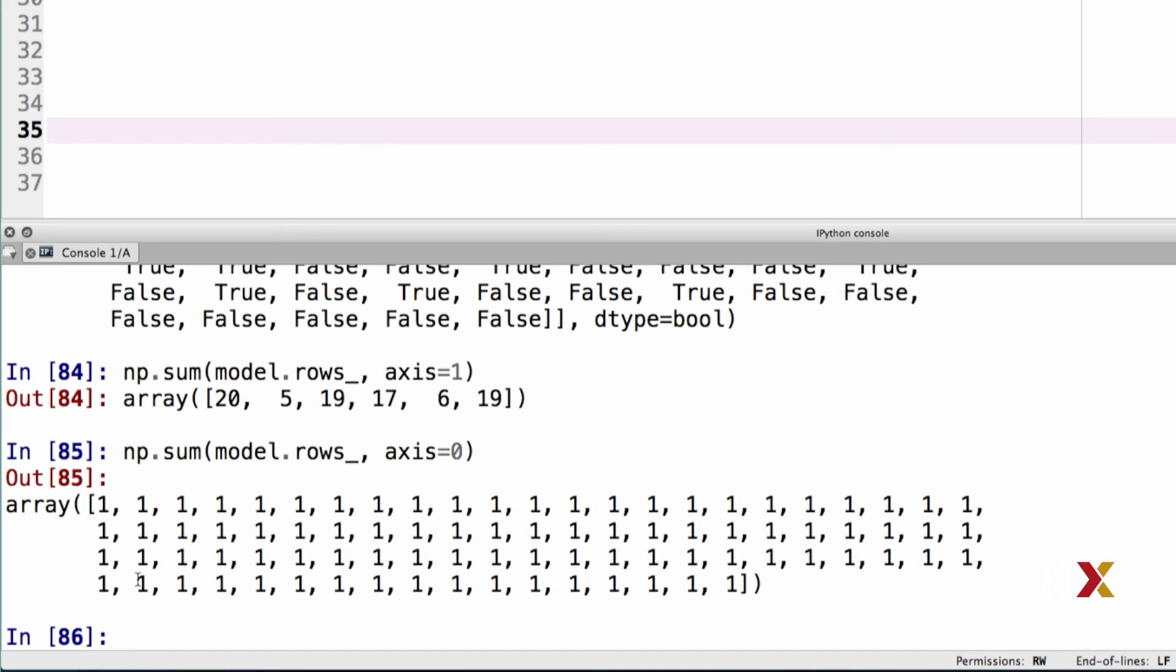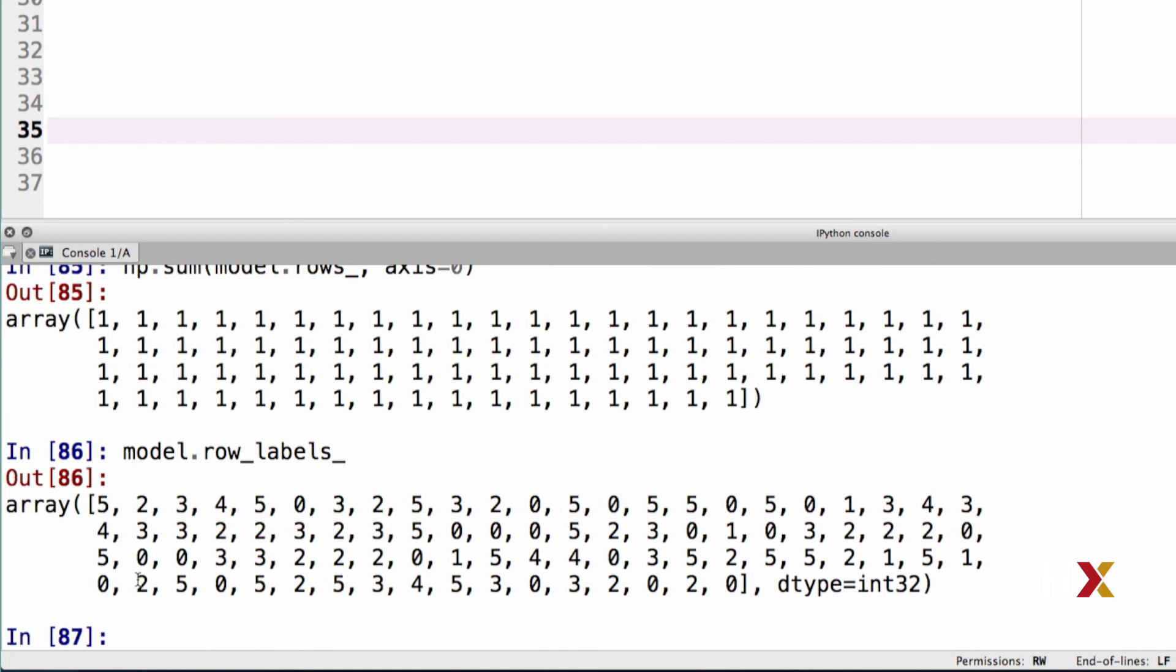Let's look at the row labels in our model. How do we interpret the output here? Observation number 0 belongs to cluster number 5. Observation number 1 belongs to cluster number 2, and so on. All of the entries in the array have to be numbers between 0 and 5 because we specified six clusters.